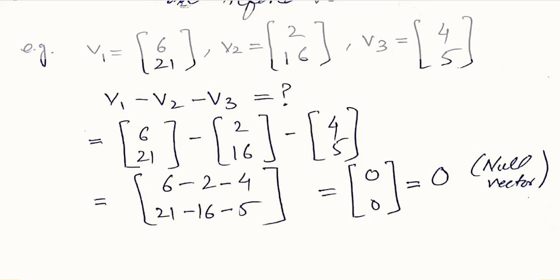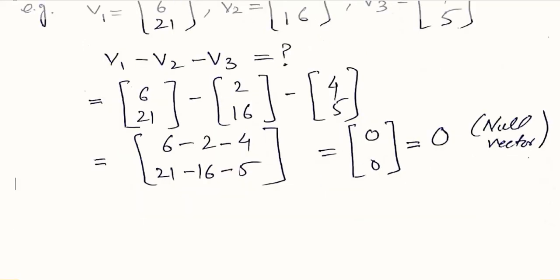You can pause the video and add these three matrices to find the answer. The order of the result will be the same as the order of the individual vectors, because the order remains the same during addition and subtraction.